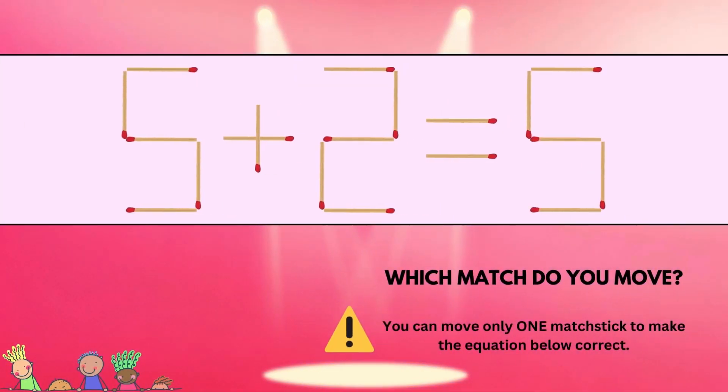Next up, the ever entertaining matchstick puzzle. Let me give you a quick recap. As you can see, this equation here is totally wrong. You need to find one matchstick which you can move to somewhere else in the equation to make it correct. No taking away a matchstick and no placing a match across the equal sign. So, do you know which matchstick to move?